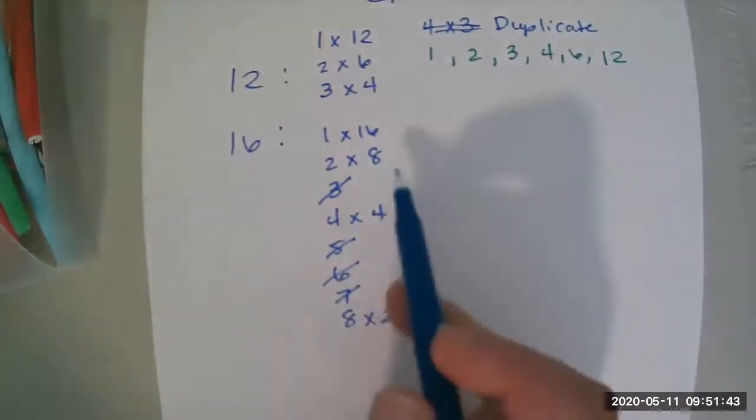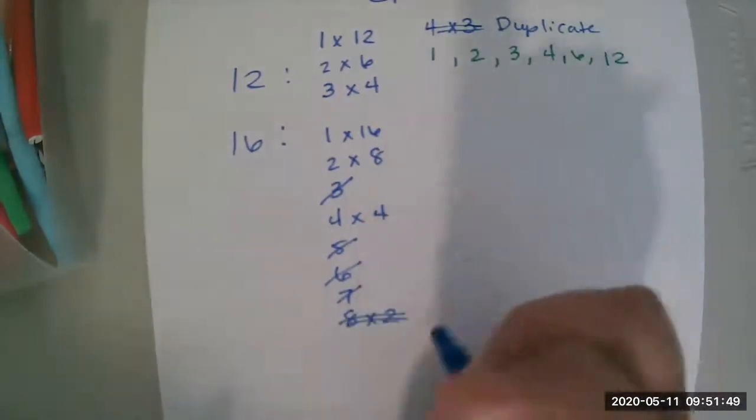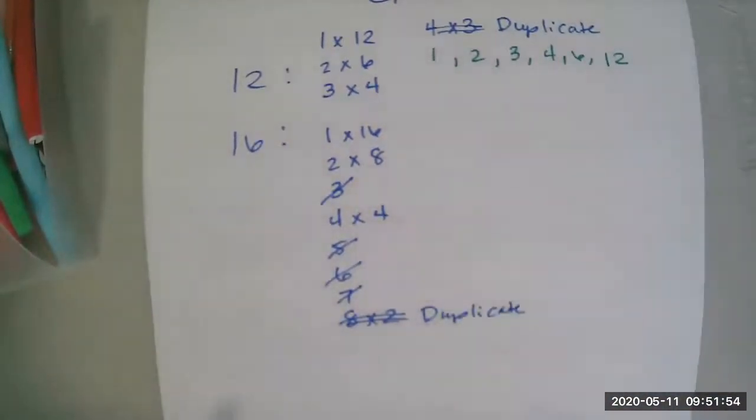But we already have 8 times 2 up here. So again, this is our duplicate, right? So this is my duplicate. And whenever you get to the duplicate, you know you're done. You've listed all your factors.